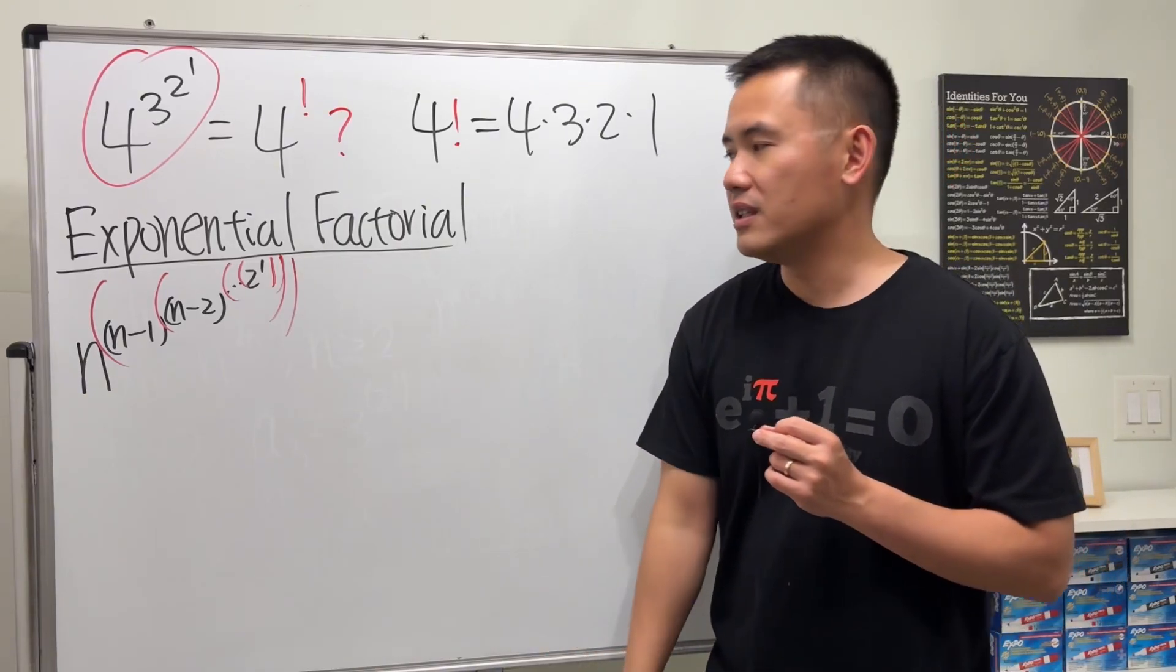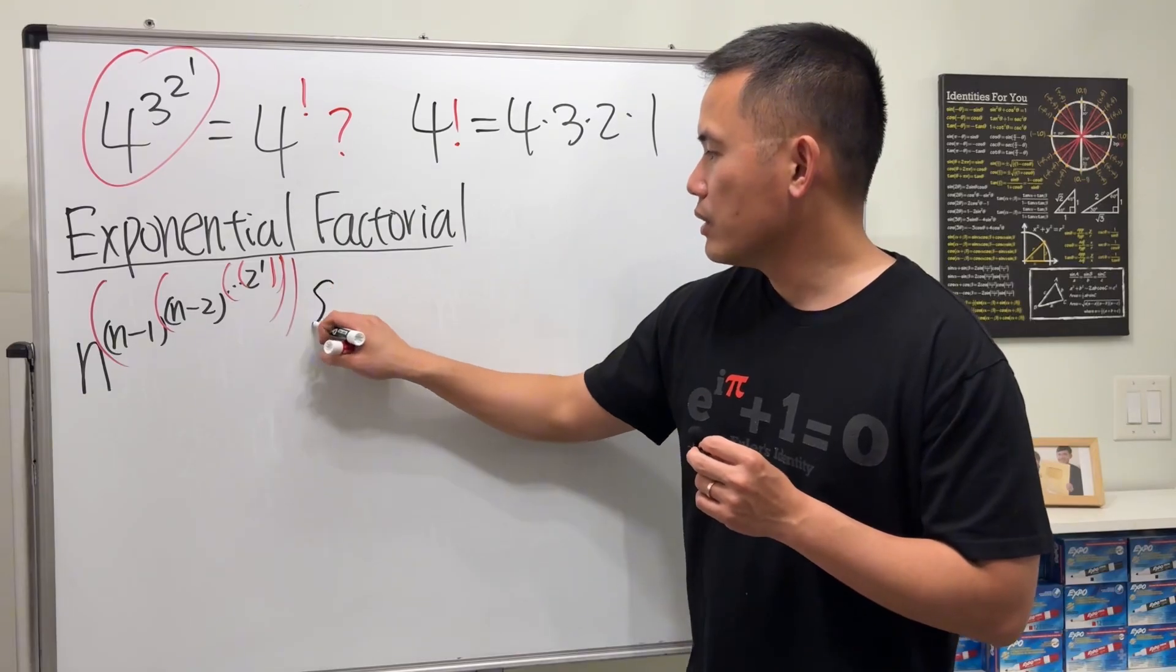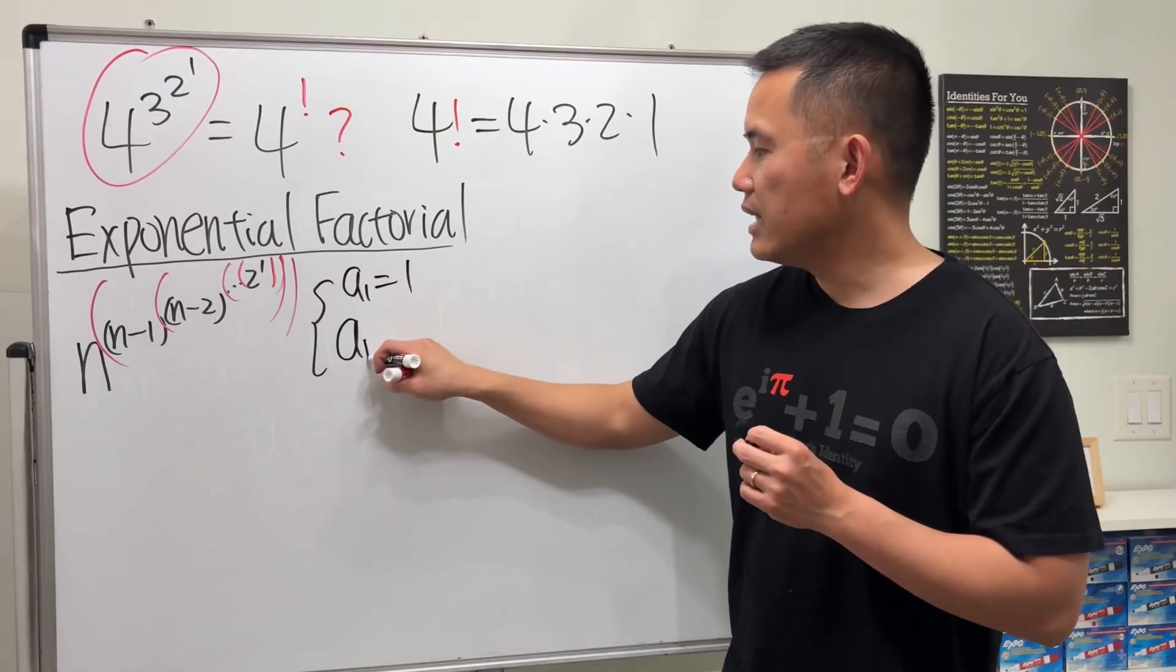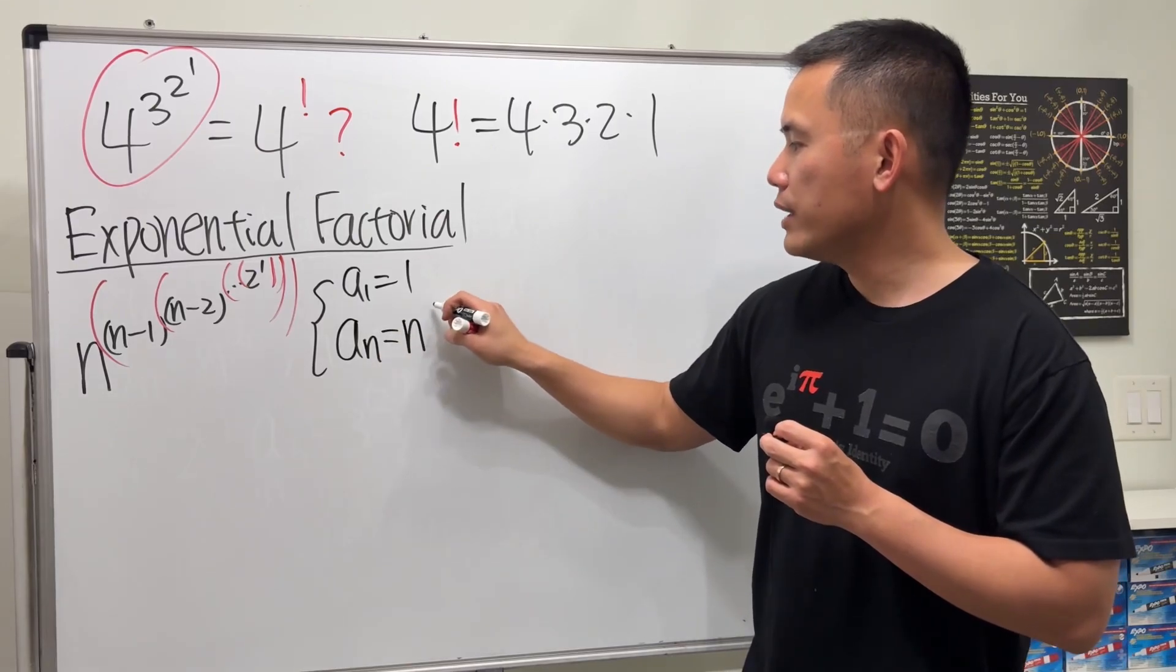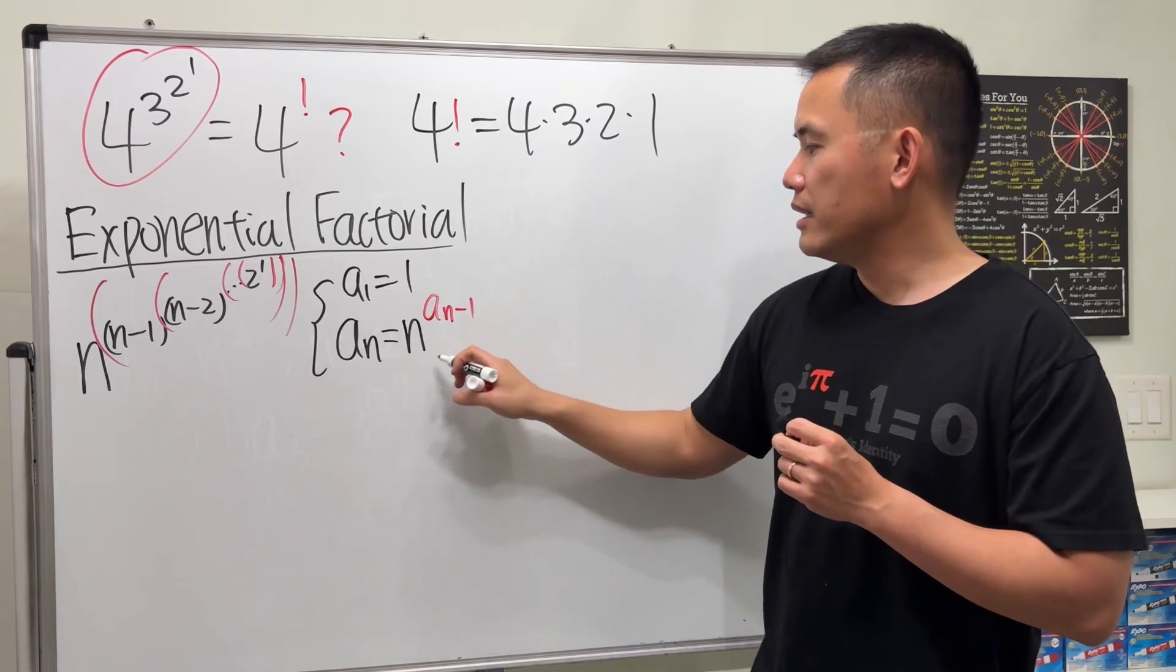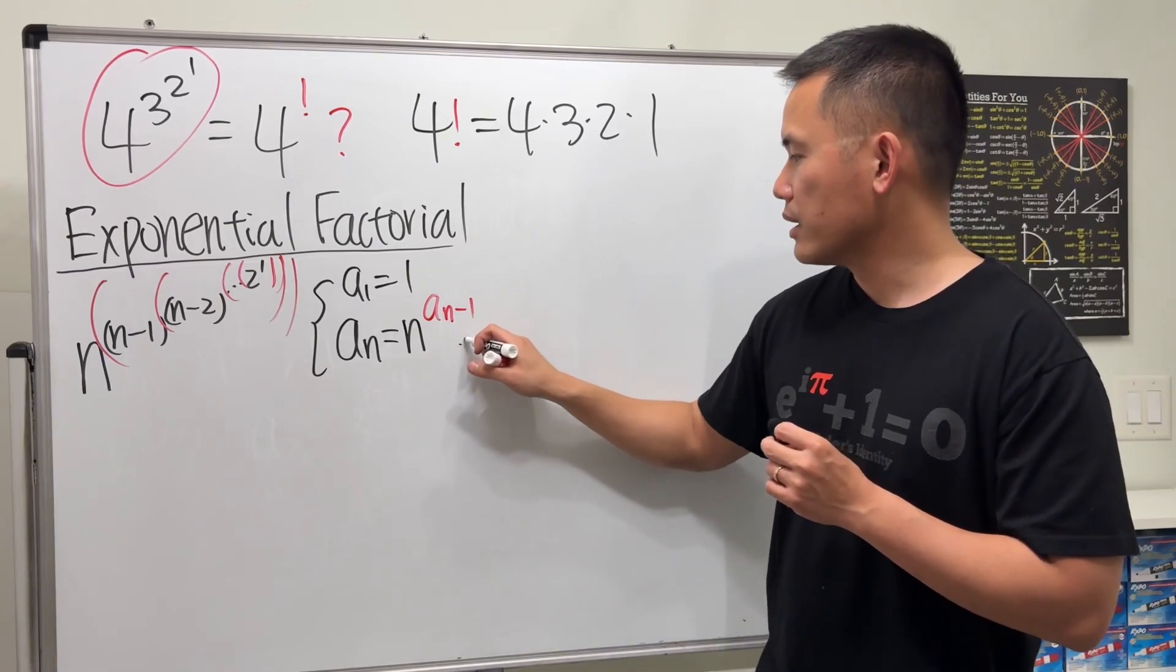But it's okay because you can write this down recursively. If you do so, you can say a1 is equal to one, and then an equals n raised to the previous power, which is an minus one. And this is true for n greater than or equal to two.